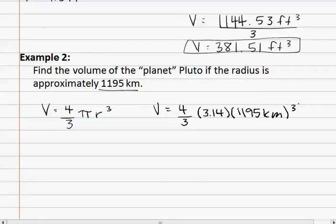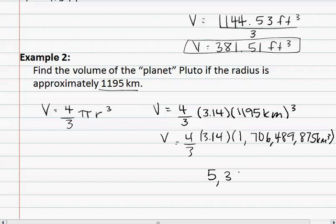When we cube this radius, we find it to be 1,706,489,875 kilometers cubed, and we bring down the rest of the values. We now multiply this by the 3.14 to get a value of 5,358,378,207.5, and this is still multiplied by the four-thirds.